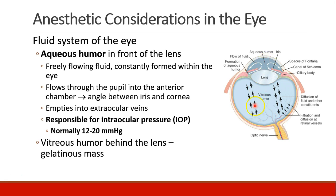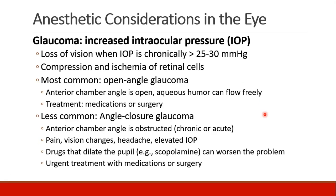Separately from the aqueous humor is the vitreous humor, which is a gelatinous mass that is behind the lens. Glaucoma is an increase in intraocular pressure. When intraocular pressure is chronically greater than 25 to 30 millimeters of mercury, patients can lose vision due to compression and ischemia of the retinal cells.